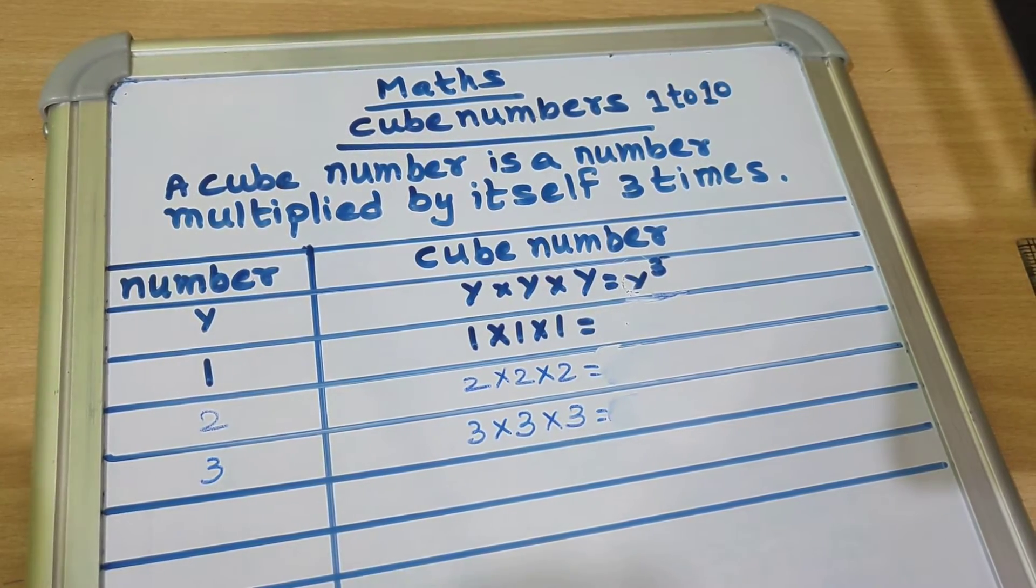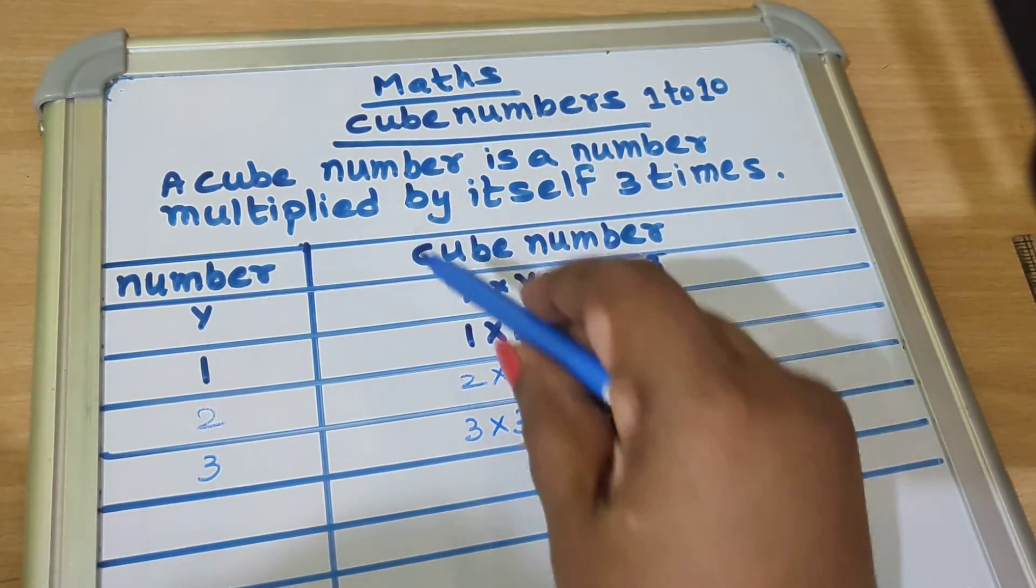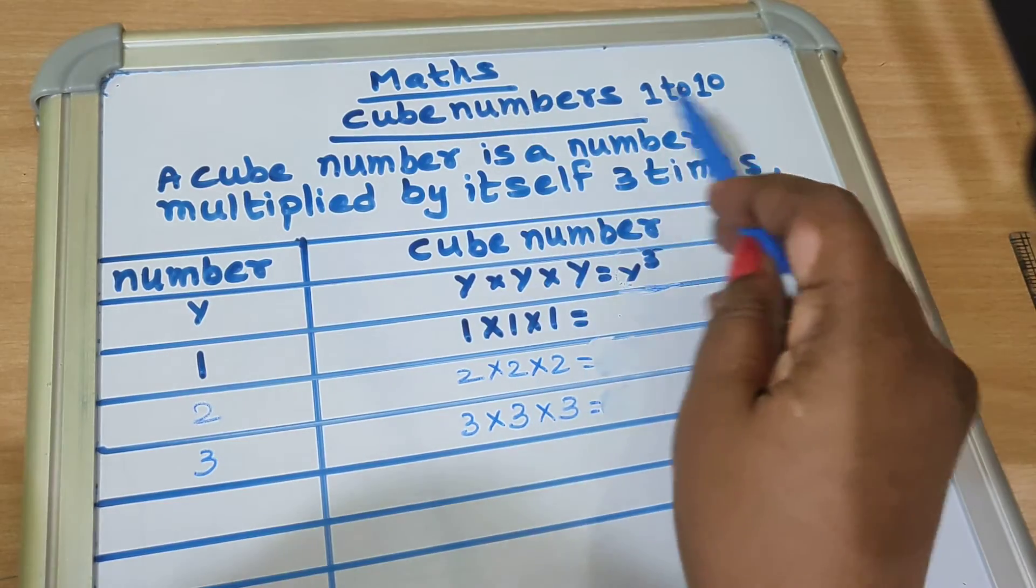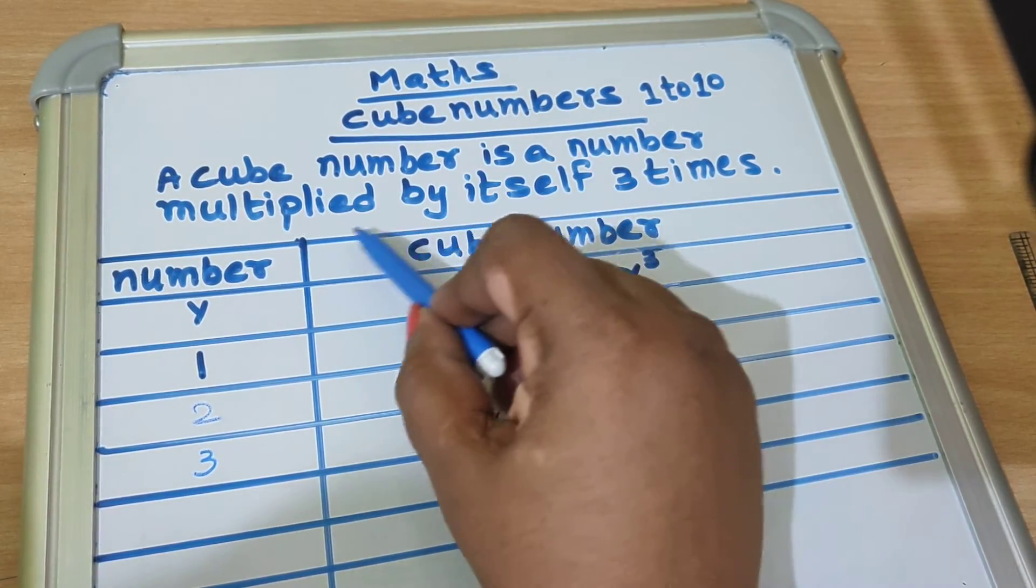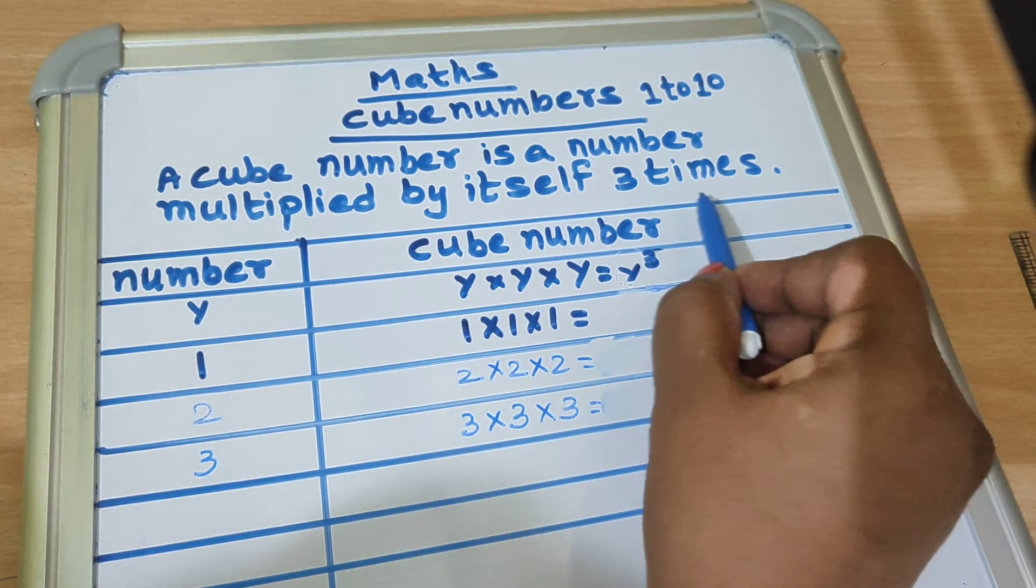Hello students, welcome to the channel. In math, today we learn cube numbers 1 to 10. What is a cube number? A cube number is a number multiplied by itself 3 times.